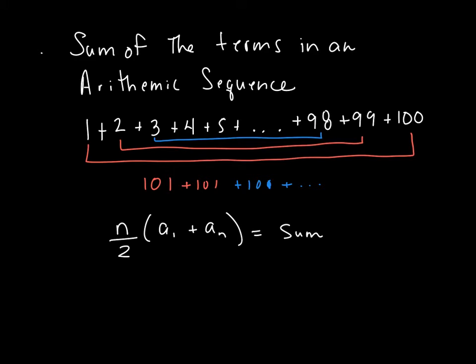So the sum from 1 to 100 becomes 50. And I get the 50 because that is just n over 2, which is 50. And then that's 1 plus 101, or 50 times 101. So that sum is 5,050.